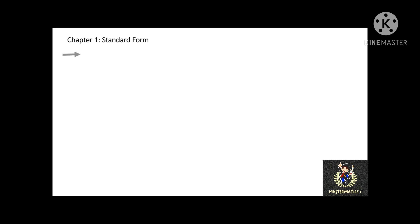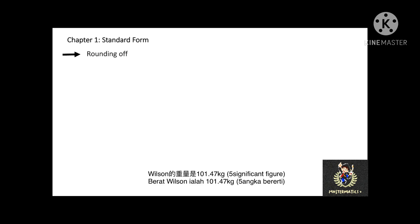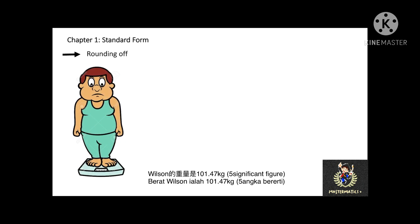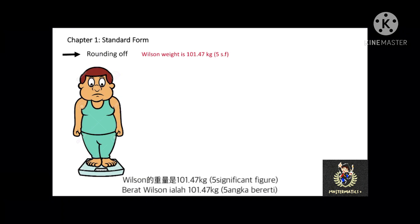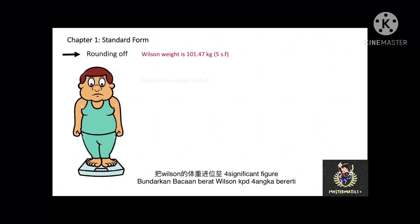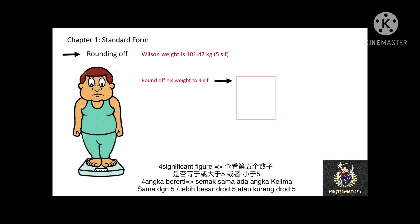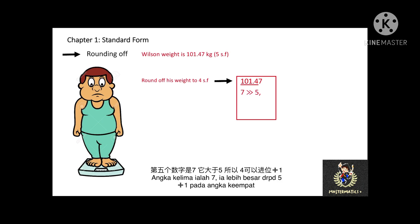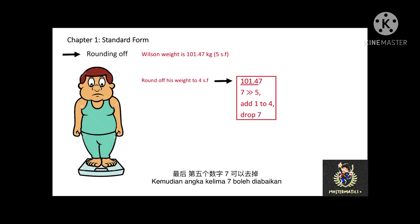Let's proceed to rounding off. For easier illustration, we will discuss Mr. Wilson's weight. Mr. Wilson's weight is 101.47 kg, which is 5 significant figures. If I want to round off his weight to 4 significant figures, we look at the fifth digit and check whether it is 5 or more, or less than 5. The fifth digit is 7, which is more than 5. Therefore, we add 1 to the 4 and drop the 7, giving 101.5 kg to 4 significant figures.